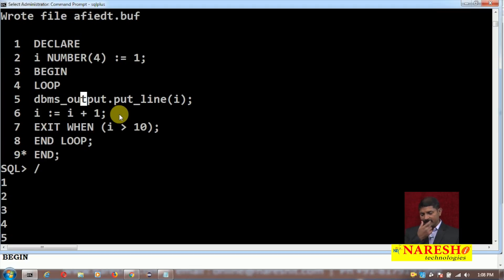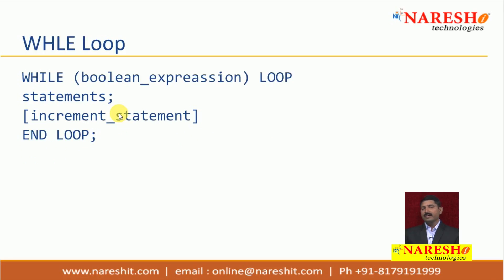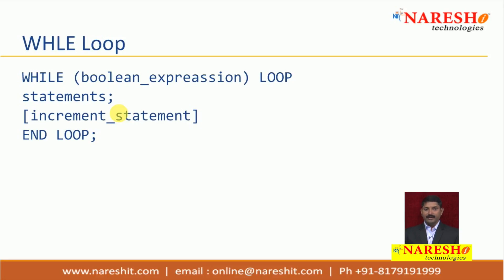Basic loop has one exit condition. On the other hand, while loop has one entry condition. The while loop syntax is: WHILE boolean_expression LOOP — statements and increment statement — END LOOP. The while loop checks an entry condition at the beginning; if the condition is true then iteration starts. There is a possibility that if the condition is false at the beginning the loop may not iterate at all, as opposed to the basic loop where the loop will iterate at least once. With while loop, the controller only enters the loop if the condition is true; otherwise the loop will not execute at all.